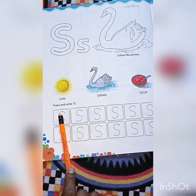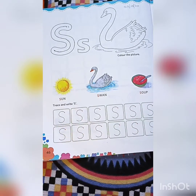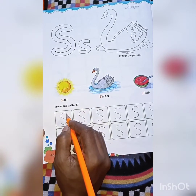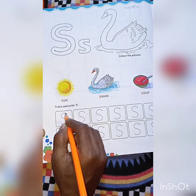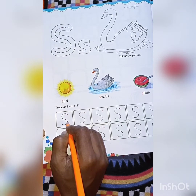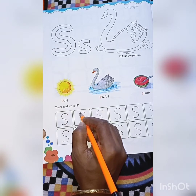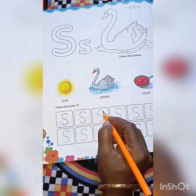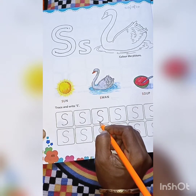Here, what is written? Trace and write letter S. Start tracing from the red dotted line and say S. S for swan.